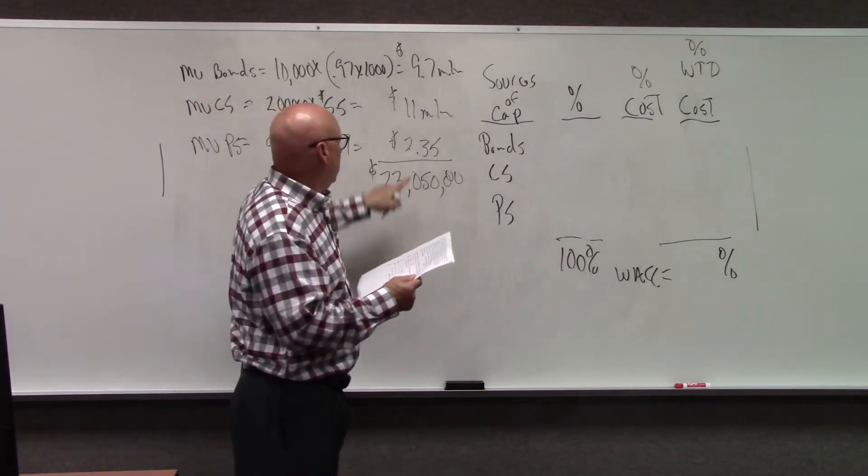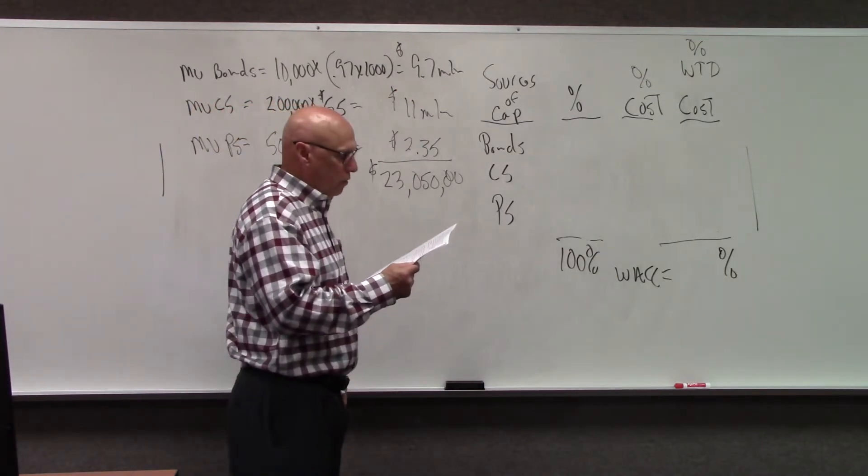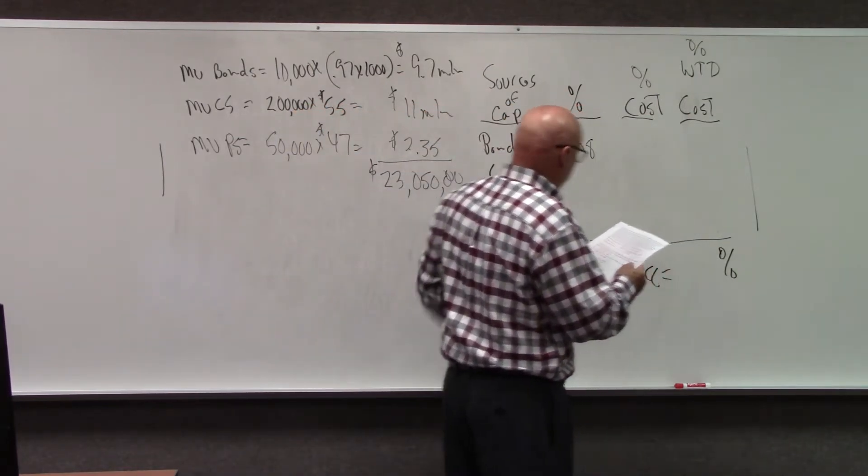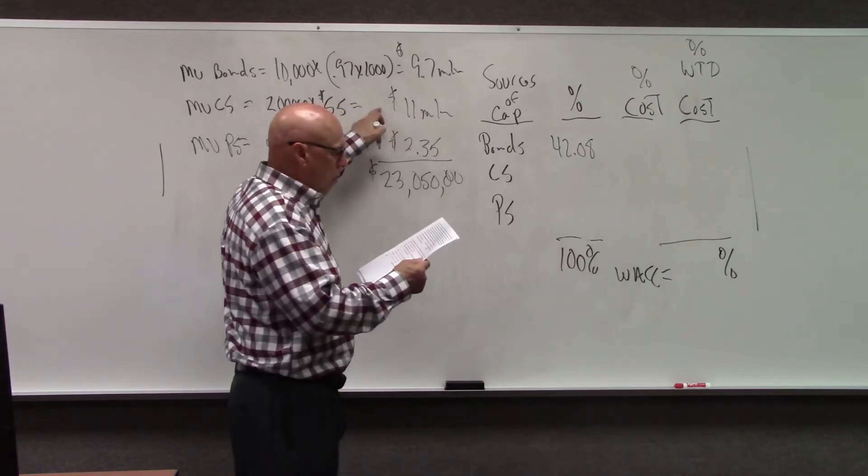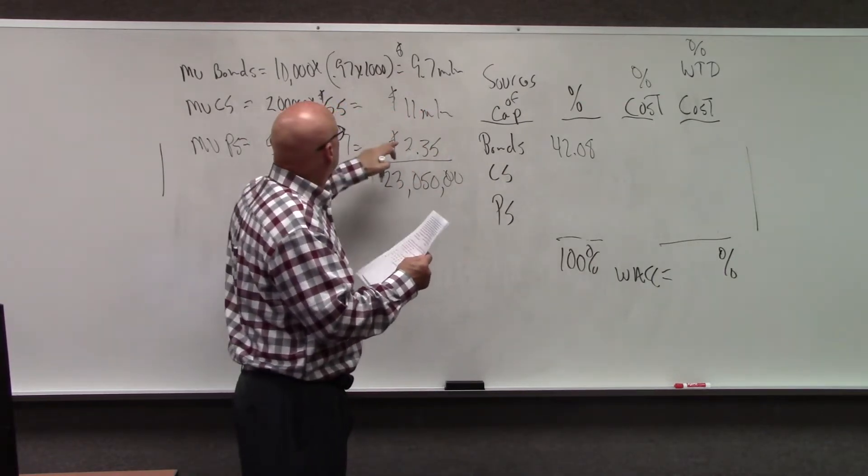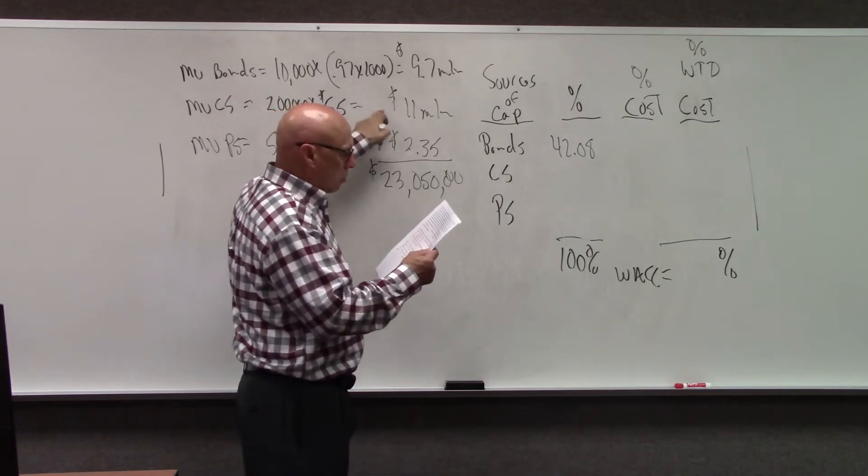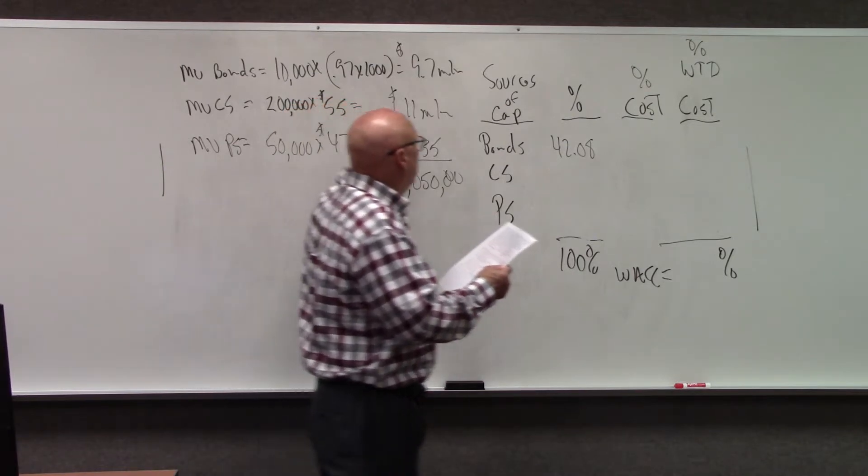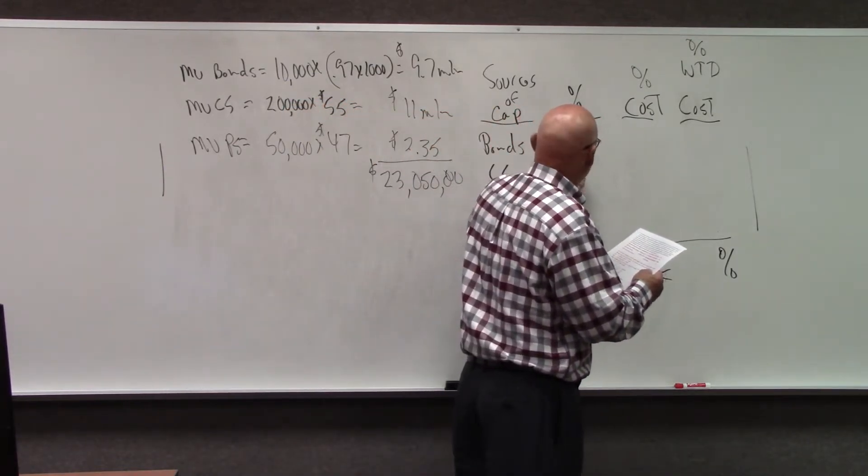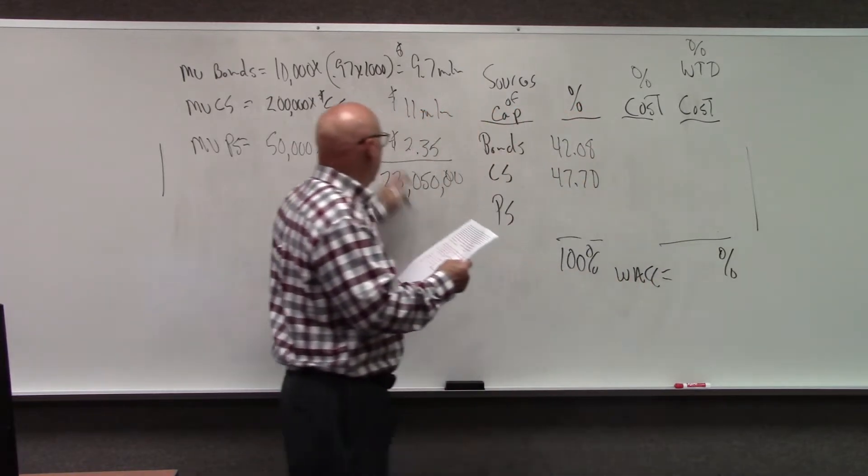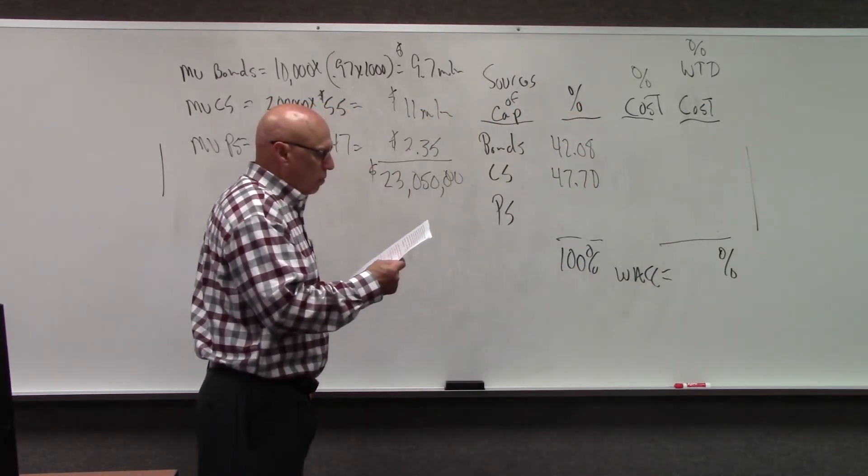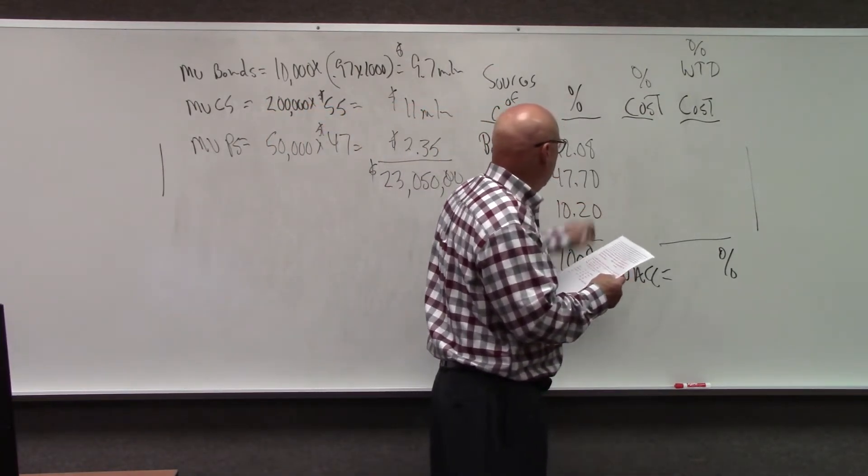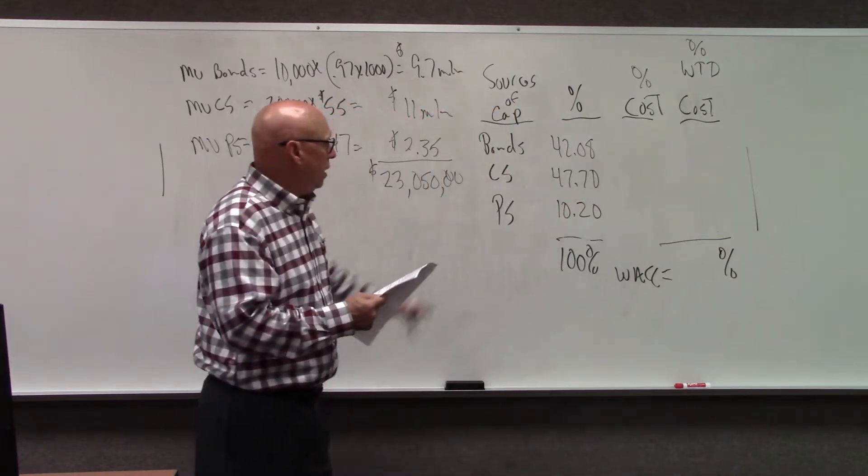Let's divide $9.7 million into $23.05 million and we get 42.08%. Let's divide $11 million into $23.05 million, which is 47.7%. Now let's divide $2.35 million into $23.05 million and we have 10.2%. With a tiny bit of rounding, we've got 100%.